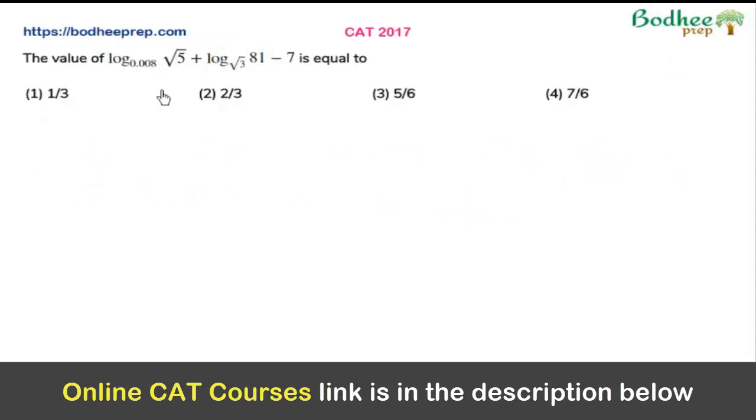Now in this question, we need to find the value of this expression. The options are 1/3, 2/3, 5/6, and 7/6. We have to simplify this expression, and we know the fact that log of a with base m to the power m, and if the base b has power n, then it can be written as m by n times log of a by b. So we'll be using this relation to simplify the given expression.